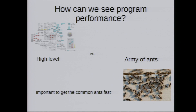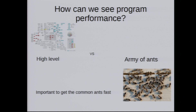How can we see program performance? One thing is you have to think about the program. There are basically two models. One is thinking in big boxes and big algorithms — that's the high level. Another way is to think of it as an army of ants: lots of small operations. The goal of program performance is to get the individual ants collectively fast. That's an important view because often people overlook how to get the small things fast.